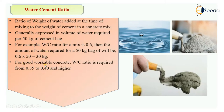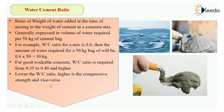For a concrete to be considered a good workable concrete, the water-cement ratio required is 0.35 to 0.40 and even higher. Note that lower the water-cement ratio, higher is the compressive strength, and vice versa.